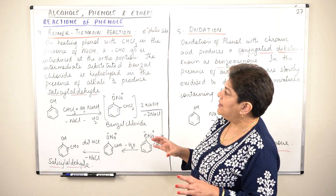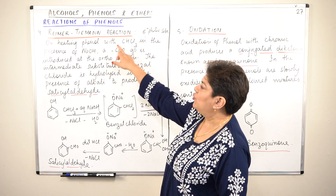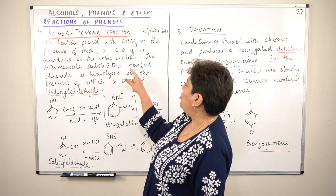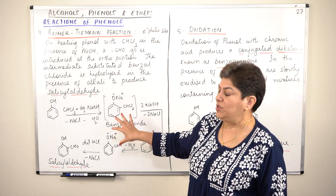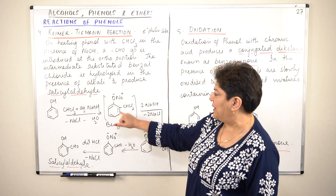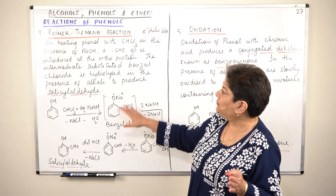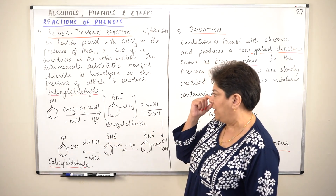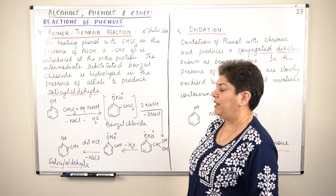In this reaction, on heating phenol with chloroform (CHCl3) in the presence of sodium hydroxide, a CHO group — that is, the aldehyde group — is introduced at the ortho position. An intermediate substituted benzoyl chloride is formed, which is then hydrolyzed in the presence of alkali to produce salicylaldehyde. Let us now see the steps and understand them.